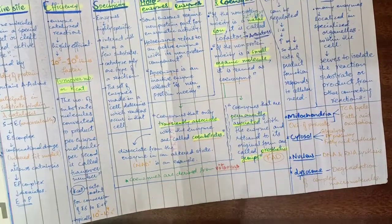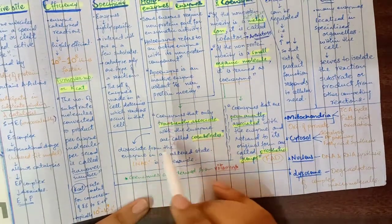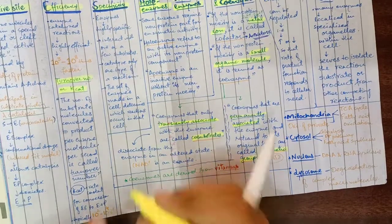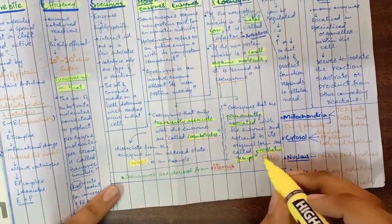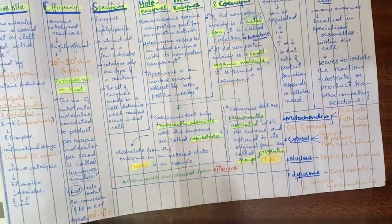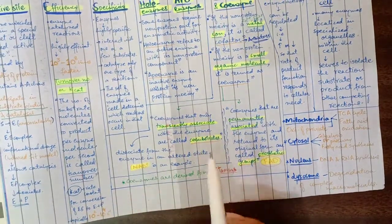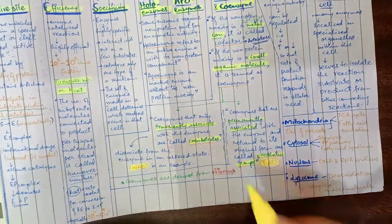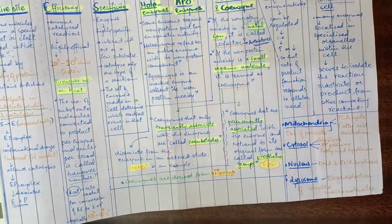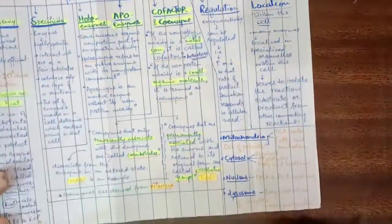Examples of co-substrates that can dissociate from the enzyme include NAD-positive and FAD. These coenzymes are derived from vitamins.